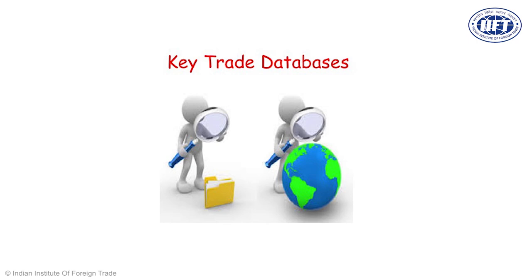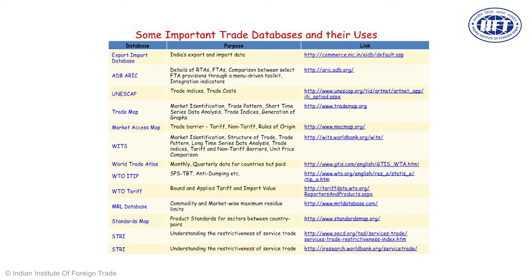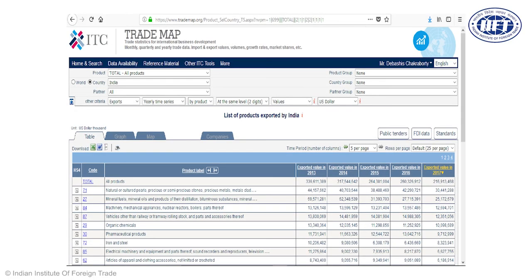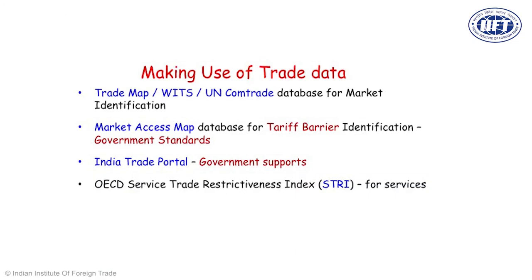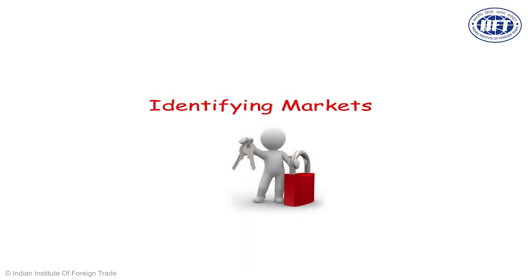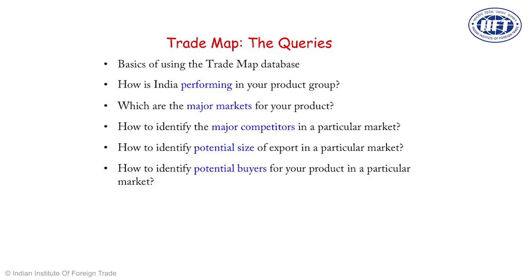What are the various databases that can be accessed for understanding the international market? There are many databases maintained by multilateral bodies: Trade Map, WITS, and UN Comtrade database all give very detailed information about international business. ITC Trade Map is maintained by the World Bank, and UN Comtrade is maintained by UNCTAD. Trade Map is a very good free resource for market identification.